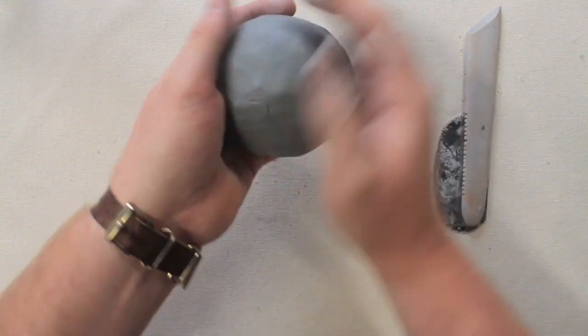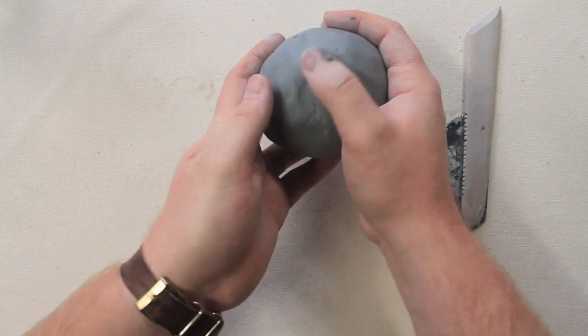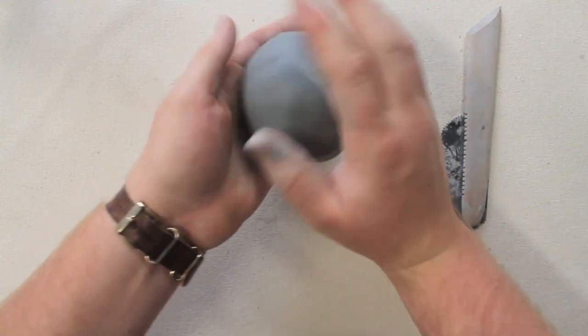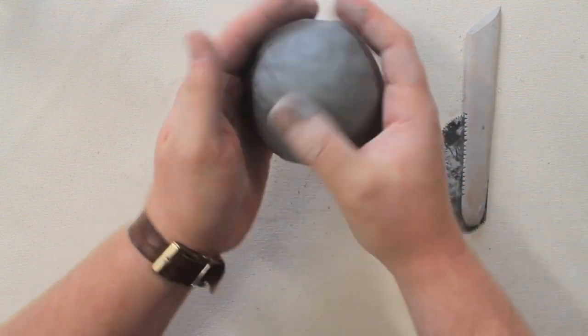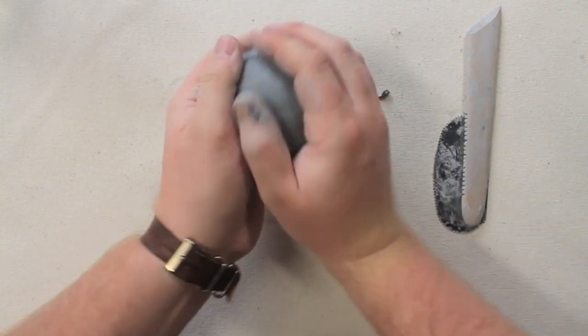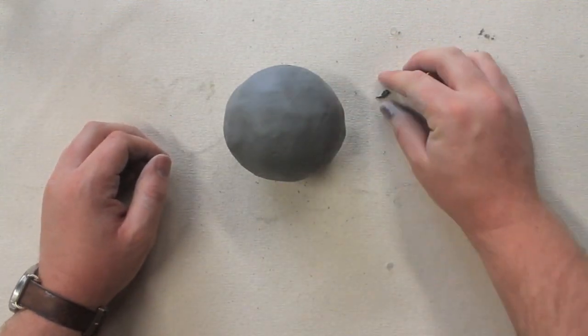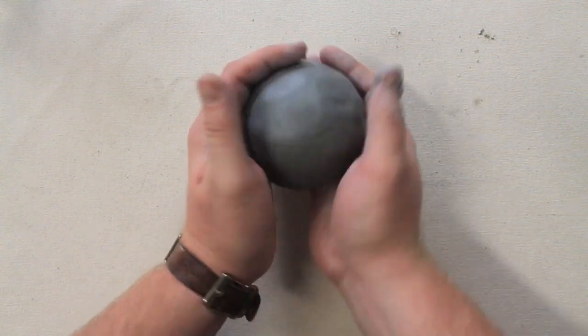And there you have it. A perfectly round sphere with air holding up the walls inside. Now don't forget, when we make our sculpture, that's not the final step. Any changes you make, the air will keep this ball nice and round. But make sure that after it dries out a little bit, we vent the air before putting it into the kiln. Good job.